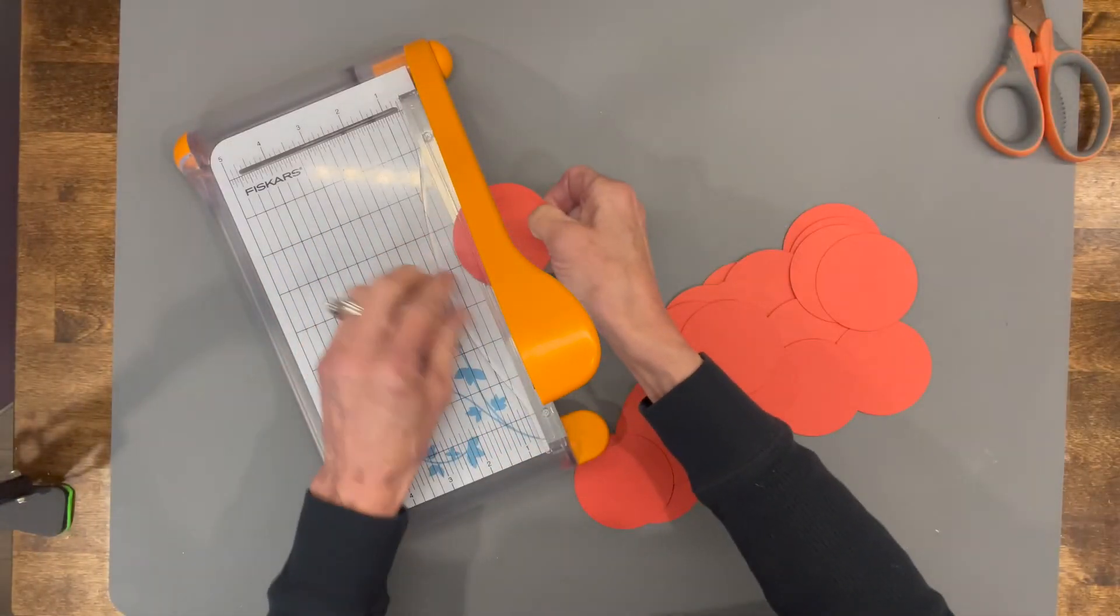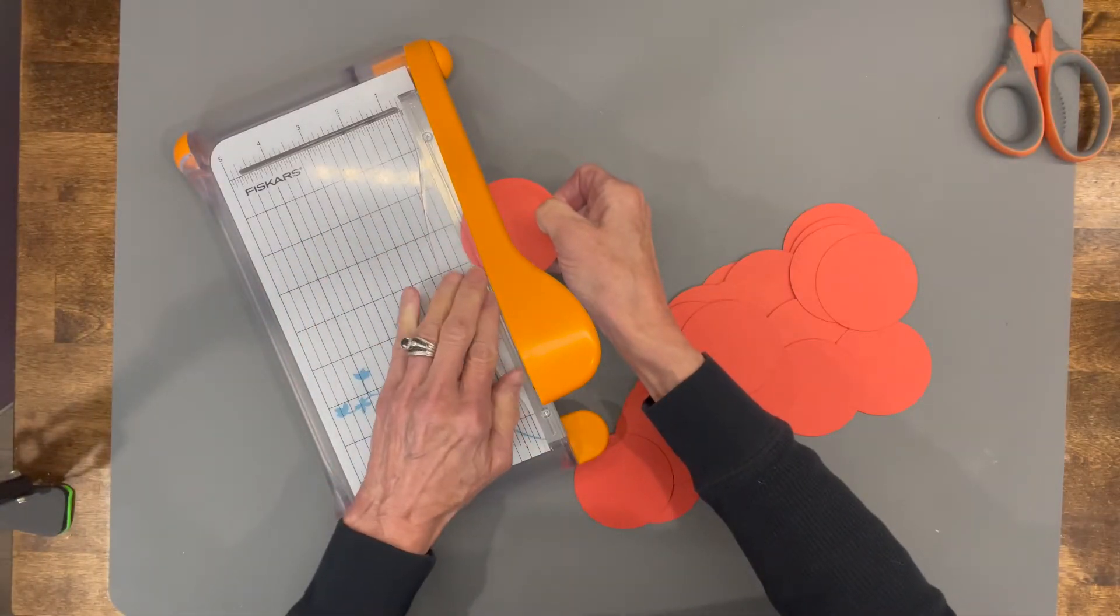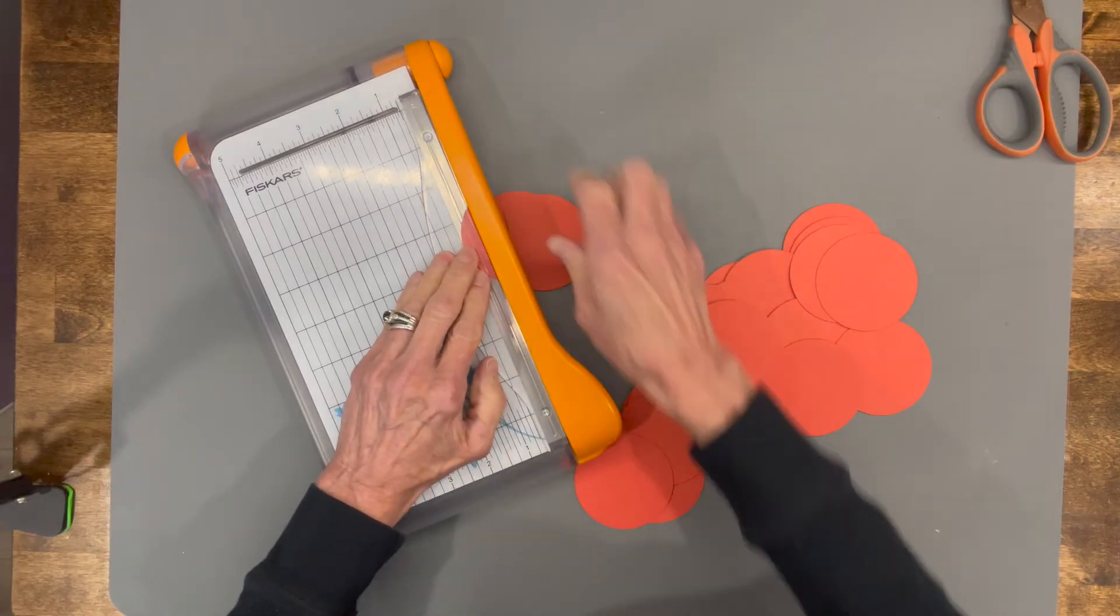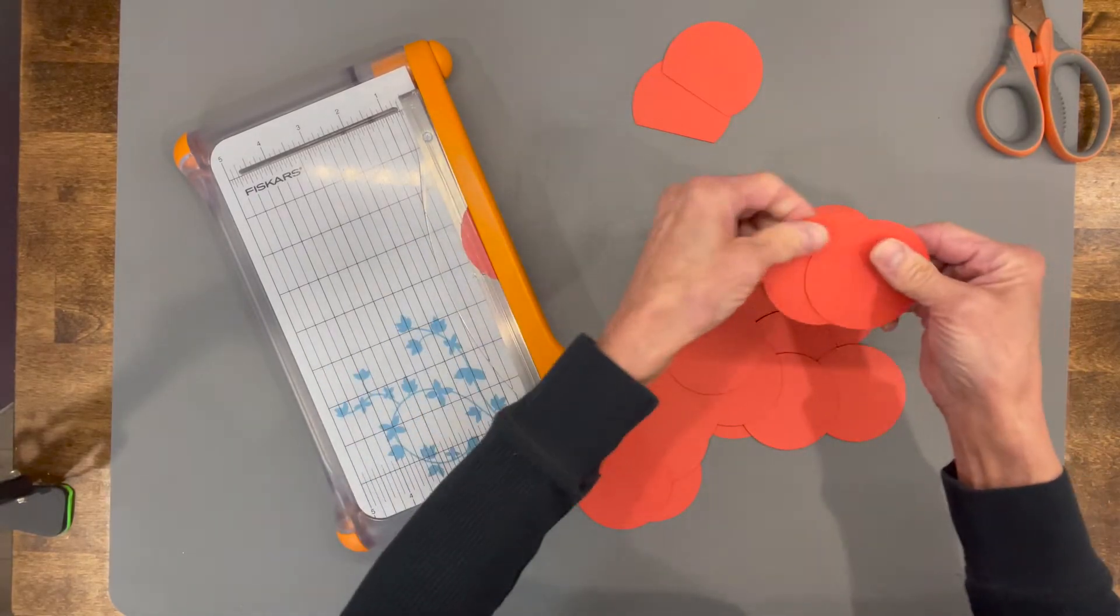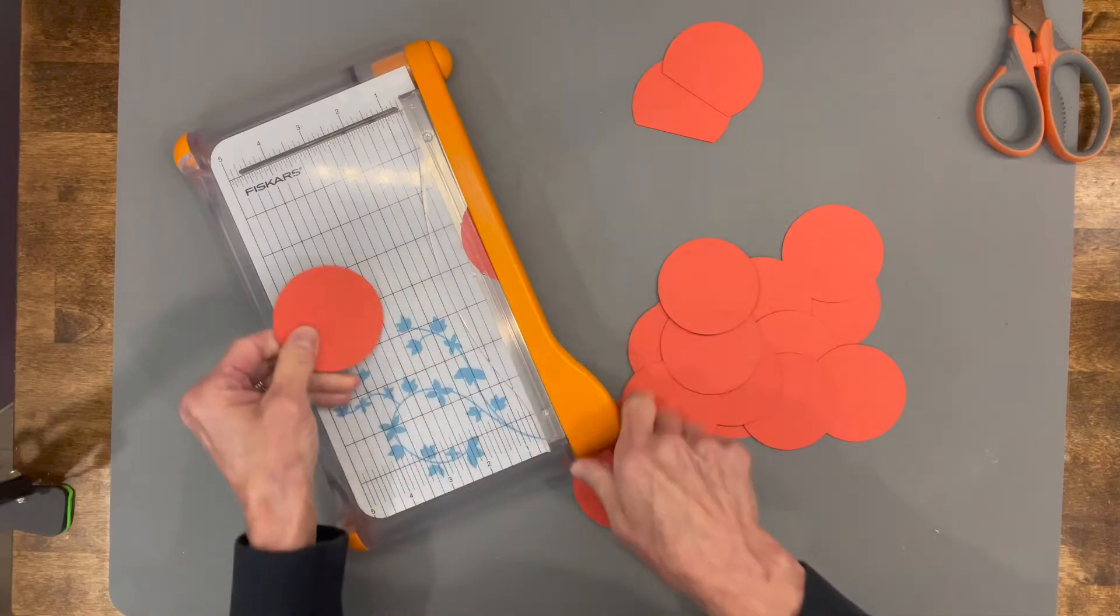Next I'm going to take a paper cutter and line two up together, and I'm going to cut half inch off the bottom. Find exactly where your half inch mark is and just make sure that each one of these gets cut exactly in the same place.